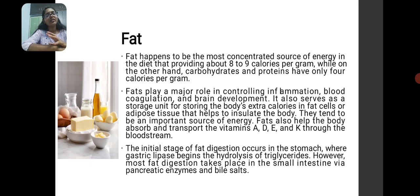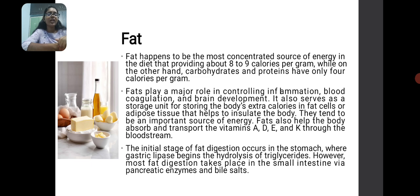Fat is also another macronutrient. It is a concentrated source of energy in the diet — 1 gram of fat gives 8 to 9 kilocalories, whereas 1 gram of carbohydrate and protein each gives 4 kilocalories. Fat plays a major role in inflammation, blood coagulation and brain development. It also serves as a storage unit for extra calories in the adipose tissue. It helps in absorbing fat-soluble vitamins like vitamin A, D, E and K. The initial stage of fat digestion starts in the stomach where gastric lipase hydrolyzes triglycerides, further followed by pancreatic enzymes and bile salts.